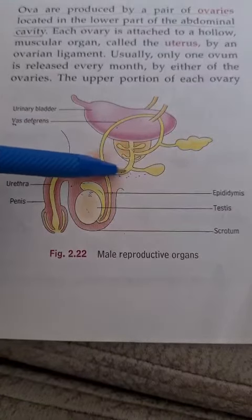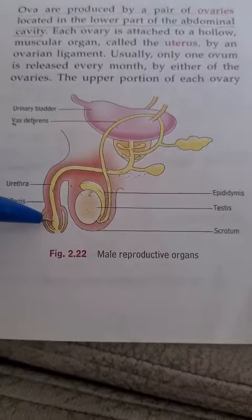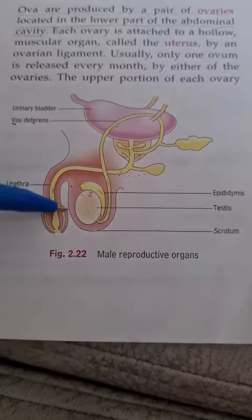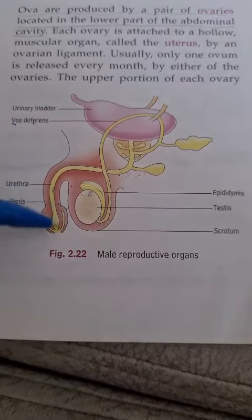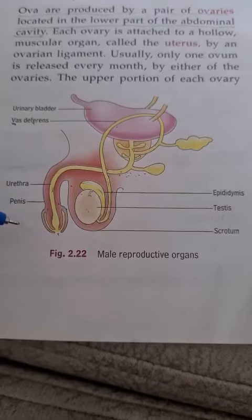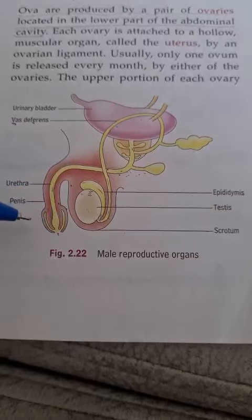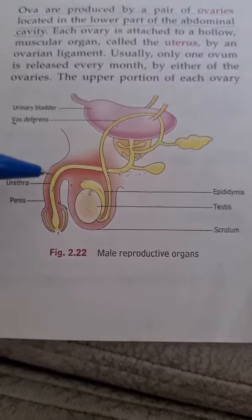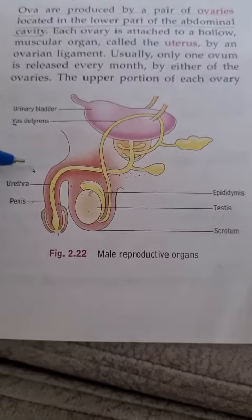Sperms are carried towards the urethra, which is present inside the penis. The penis is the ejaculatory organ which discharges these sperms into the female reproductive system. In the next video, we will study about the female reproductive system. The diagram of the male reproductive system is also very important.